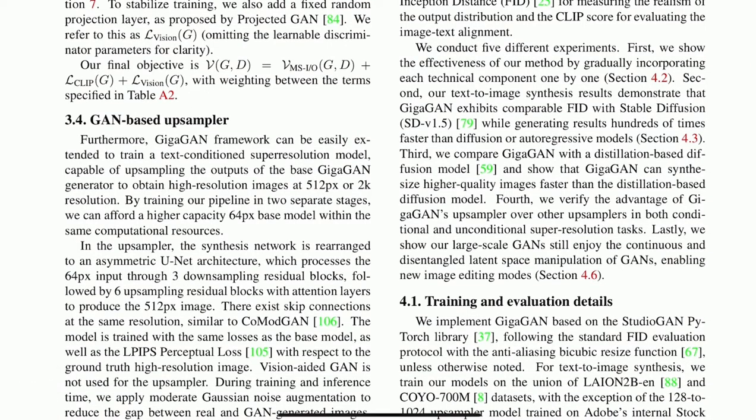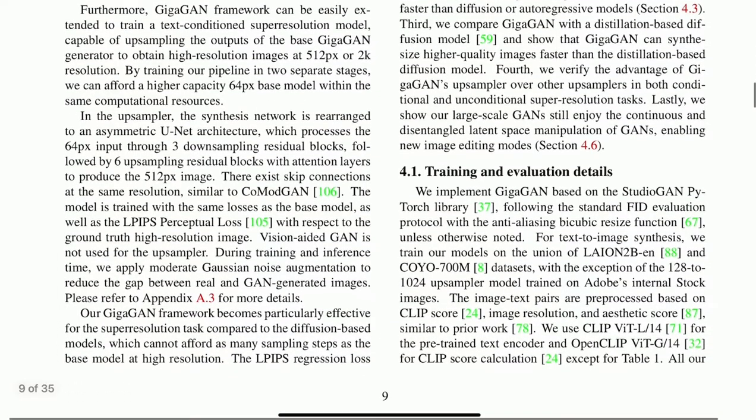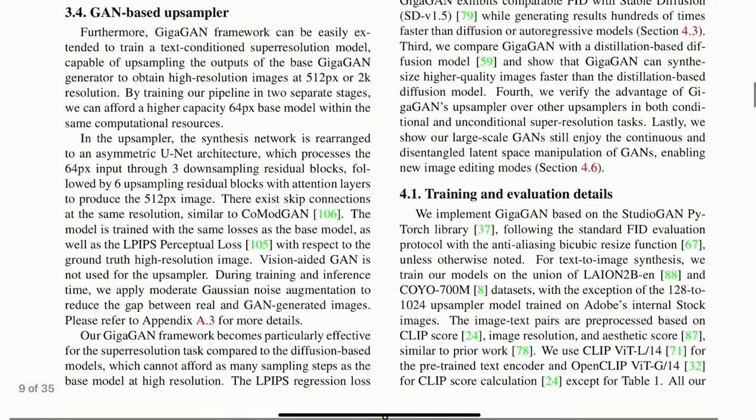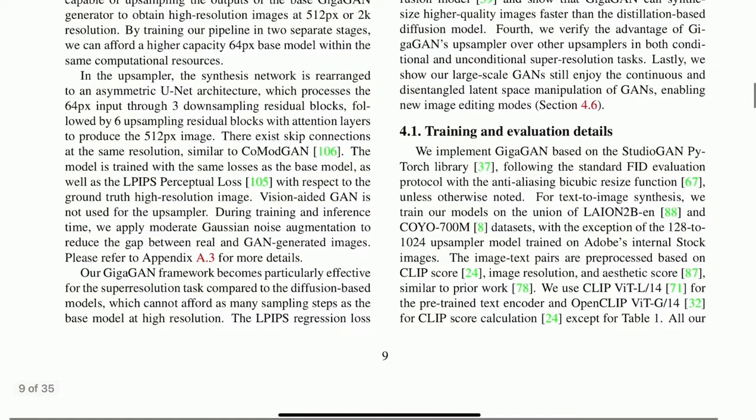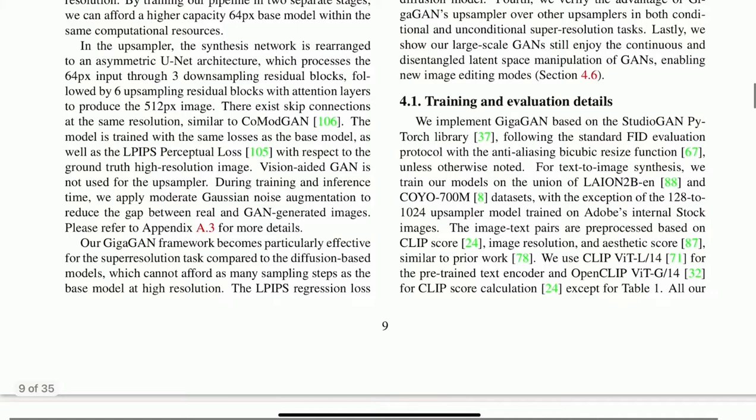Now the last interesting part is the upsampler. This upsampler can be used on top of other networks, let's say Stable Diffusion, or you can use on top of a real image that is just too small. And to do that they have a U-Net architecture that is asymmetric. So they start, let's say, with 64 pixels and then they downsample it first and then they upsample it and then they can get, for example, to a 512 resolution. And of course they use skip connections because we all know that this is really important. They use the LPIPS loss and they ignore the vision-aided GAN. So basically that's how they can have the network generate high resolution images. And also they apply a moderate Gaussian noise to reduce this gap between real and GAN images. So it helps on the training of the discriminator and the generator.